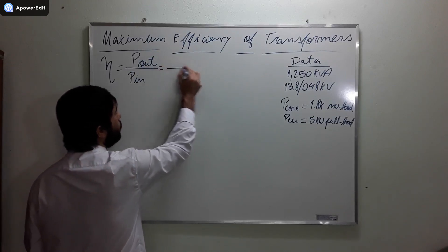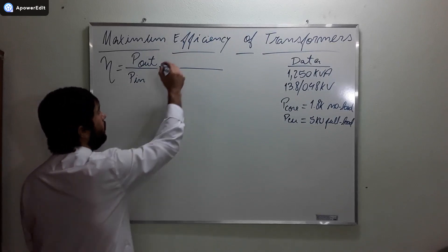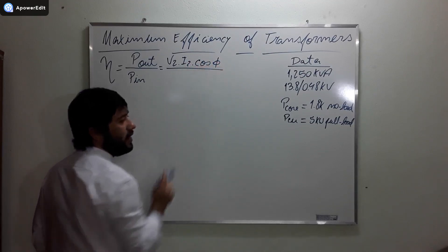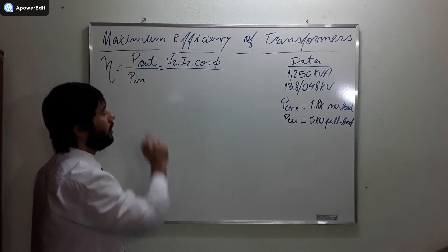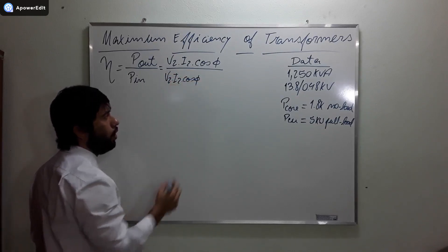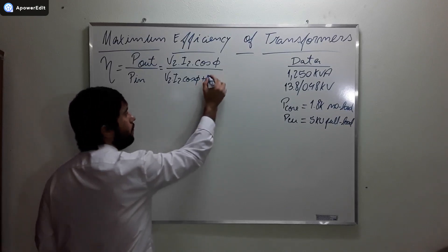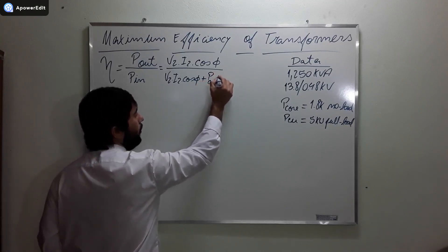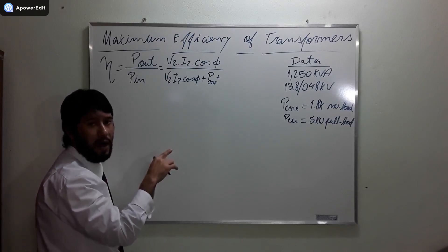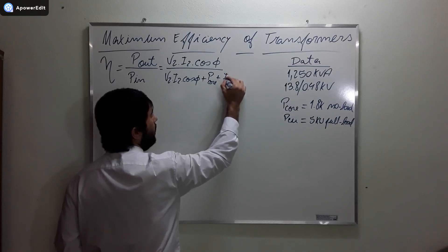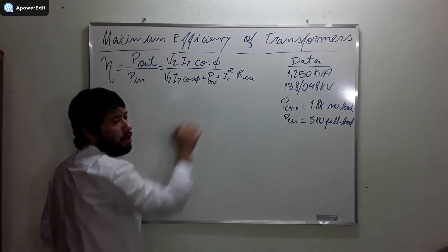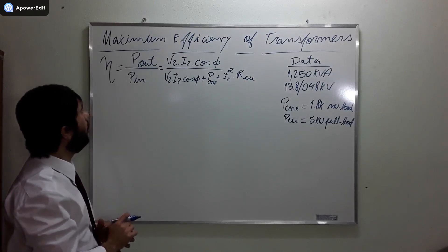Efficiency is the ratio between the output power and the input power. The output power in terms of the output current is V2I2 times the cosine of the angle. And the input power is V2I2 times the cosine of the angle plus the core losses plus the copper losses. But the copper losses depend on the output current, so it's going to be I2 squared times the resistance of the copper wires.